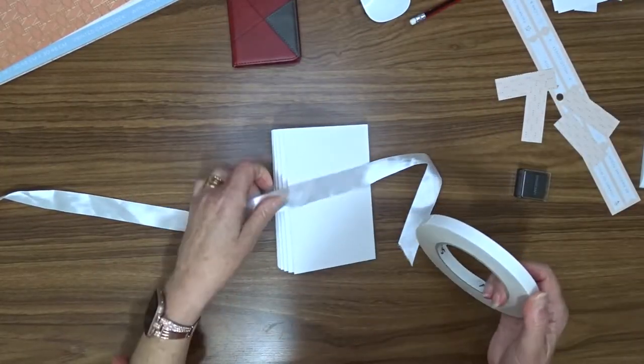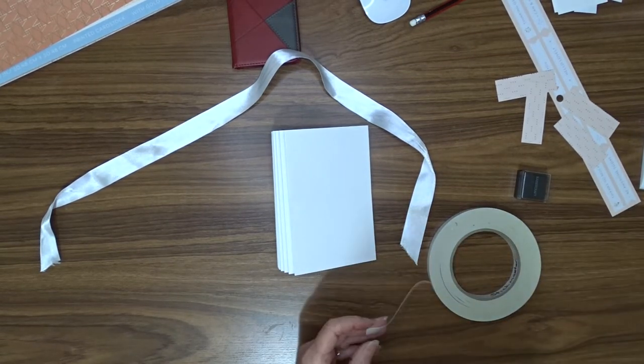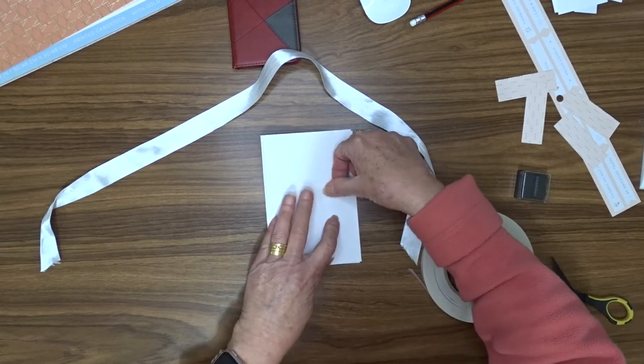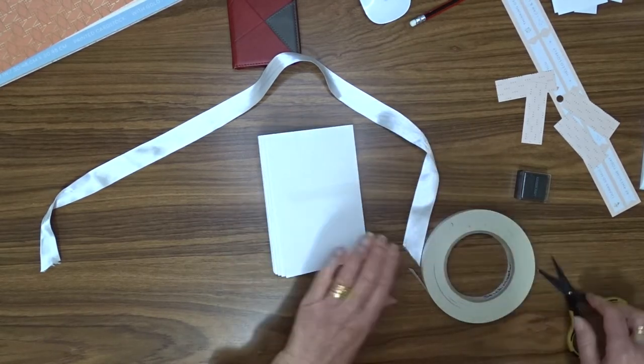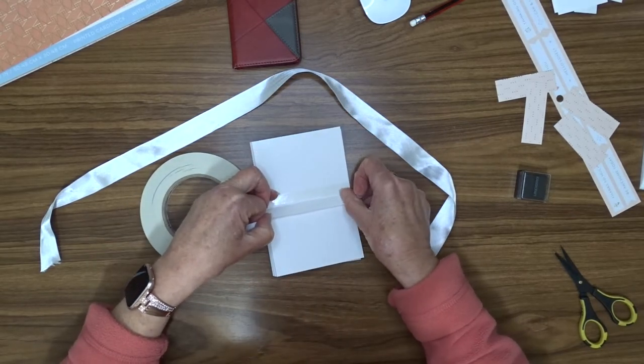I'm going to use this one-inch wide satin ribbon to keep my card closed. You could close it without a tie, but I think the tie looks nice and it certainly helps to keep the card in the right place.